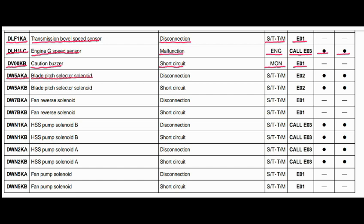Code DW5AKA. The faulty part is the blade pitch selector solenoid. The problem is disconnection. The controller related to this fault is the steering and transmission controller, and the action code is E05. Caution lamp will blink and caution buzzer will beep.